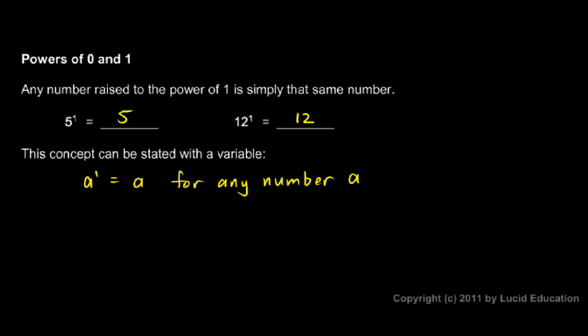Then it makes sense that we simply have that number. So 5 to the 1 is 5 or 12 to the 1 is 12 or anything to the power of 1 is that thing.